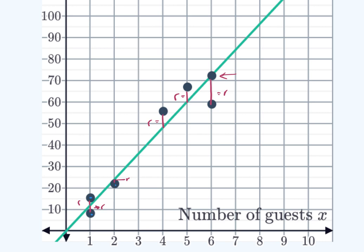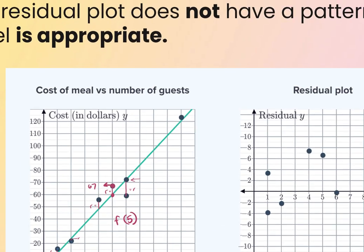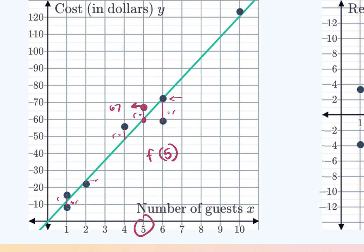It might ask you to find the value of R. You take the actual value and subtract the predicted value. For example, if the actual was 67 and the linear model gave 60, then R is 7 — a positive 7, meaning the model underestimated. If R is negative, the model overestimated. R is not the same along your entire model — it will be specific to a given x-value.